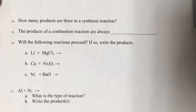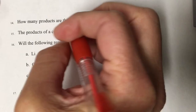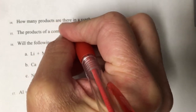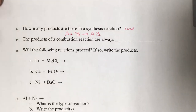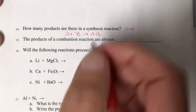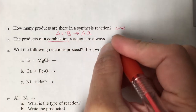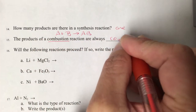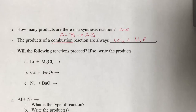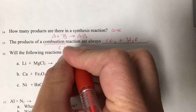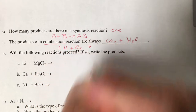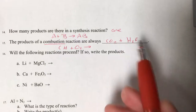How many products are in a synthesis reaction? One. Two elements combine to make a single compound — just one product. The products in combustion are always carbon dioxide and water. A combustion reaction has some kind of hydrocarbon — C-something, H-something — plus oxygen. When asked to predict the products, just write carbon dioxide and water. It's one of the easiest to do.